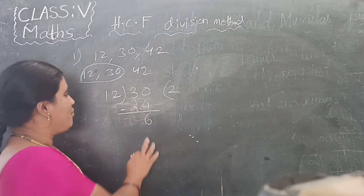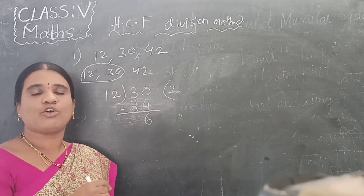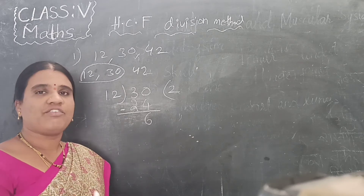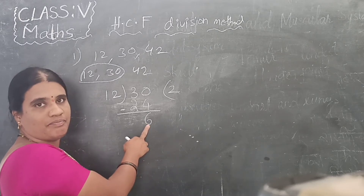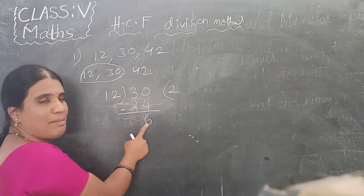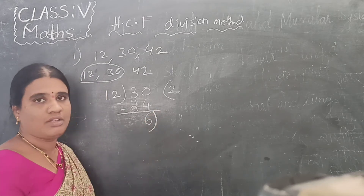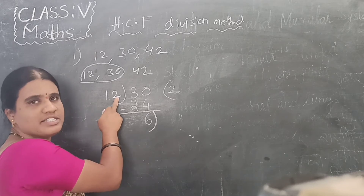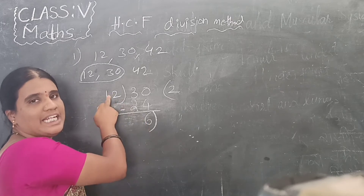Normally in division we stop here, or we add a decimal point and continue. But in the HCF division method, we do the division again with the remainder. The remainder is 6 — so you have to do the division again using the divisor. This is the divisor note.